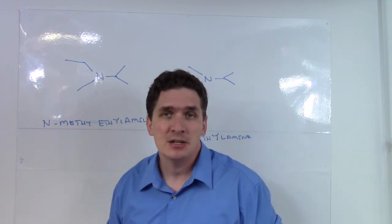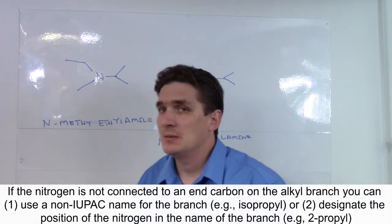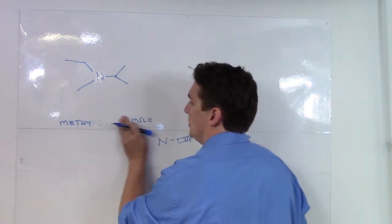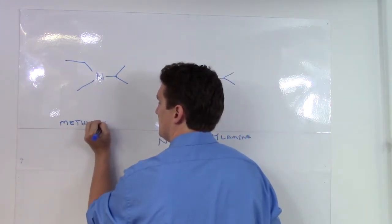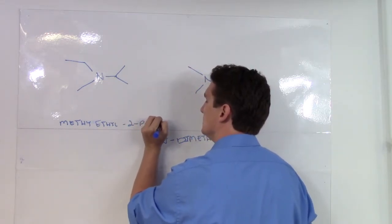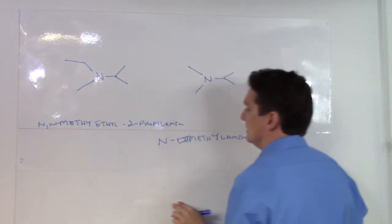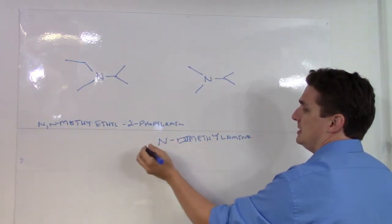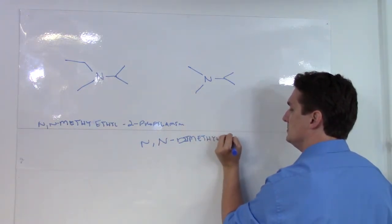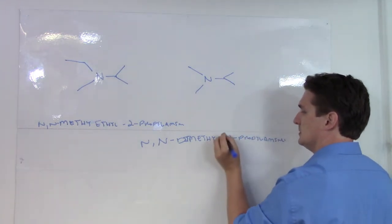We can either call it by a non-IUPAC name, which is acceptable, like isopropyl, or we can specify the number of position, which is what I'm going to advocate for you. So in terms of increasing length, we've got methyl ethyl 2-propyl amine. And this would be N-N-methyl—in this case, we have an N,N-dimethyl 2-propyl amine.